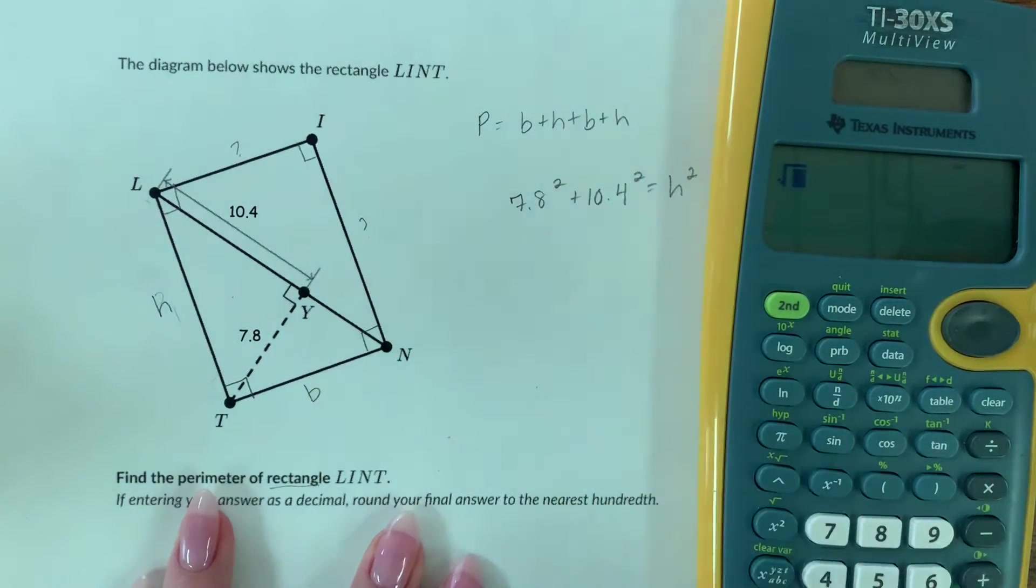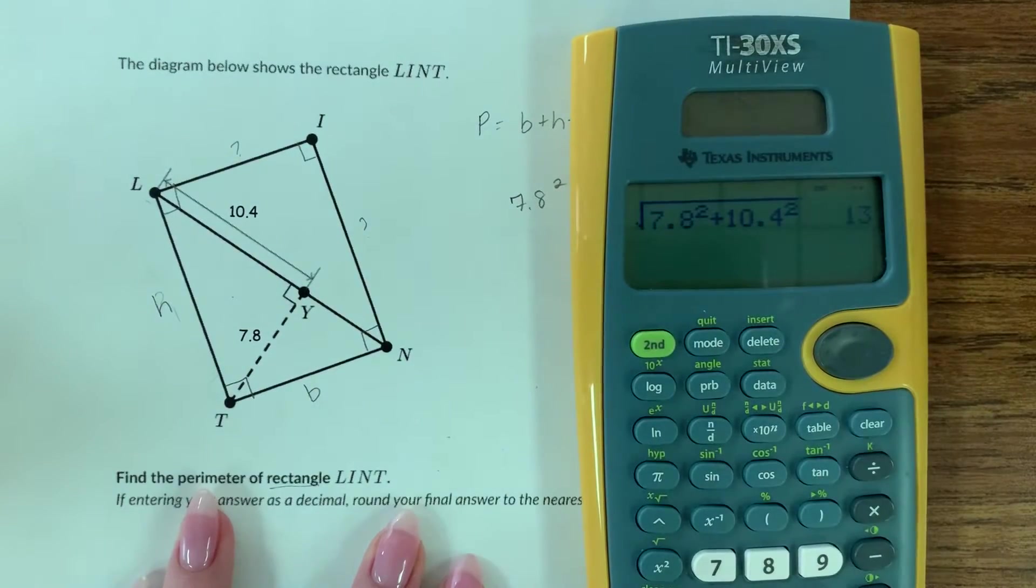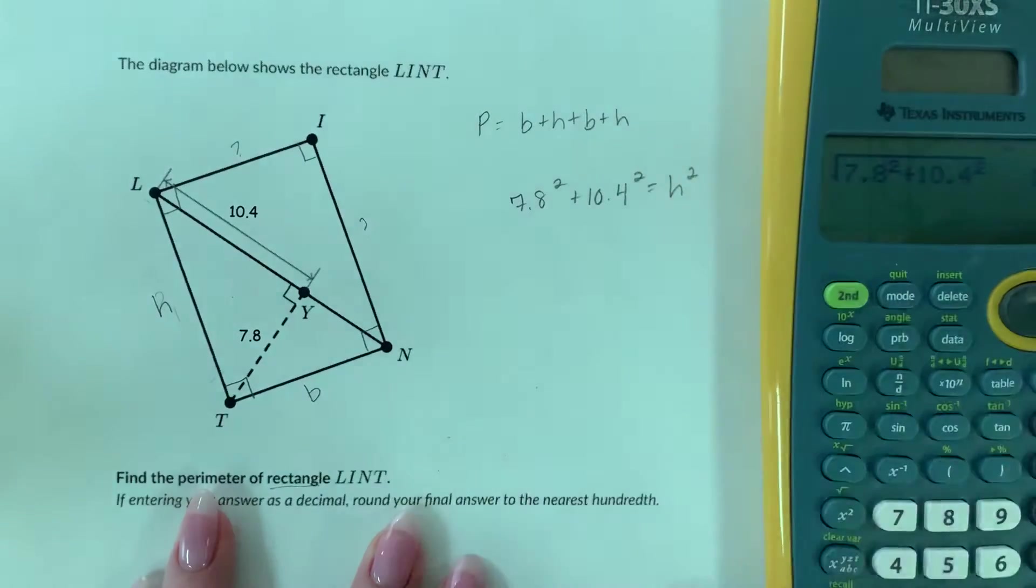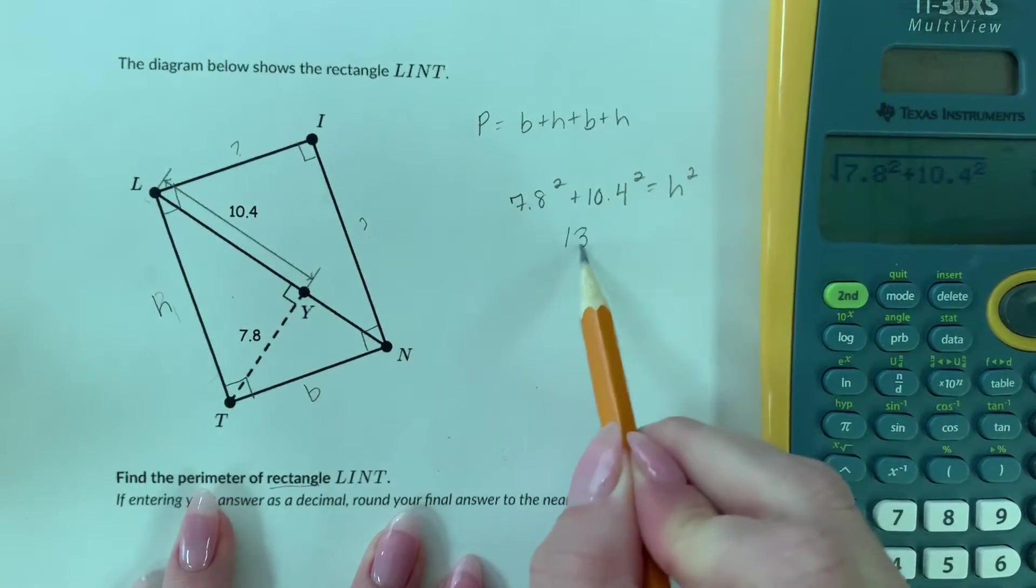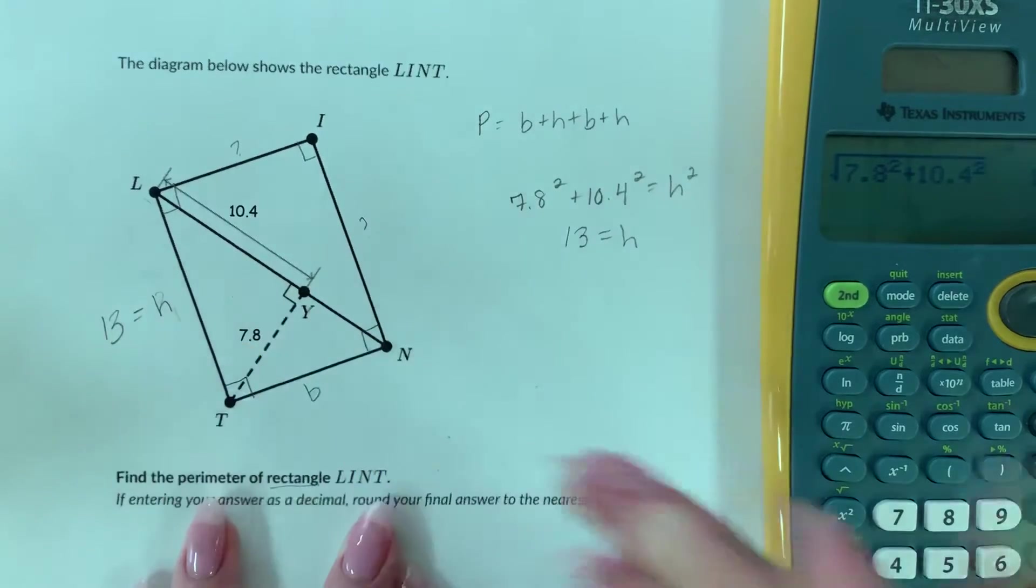So 7.8 squared plus 10.4 squared, instead of doing each step by itself. If I hit enter, I end up getting 13 for that height, so this value is 13.